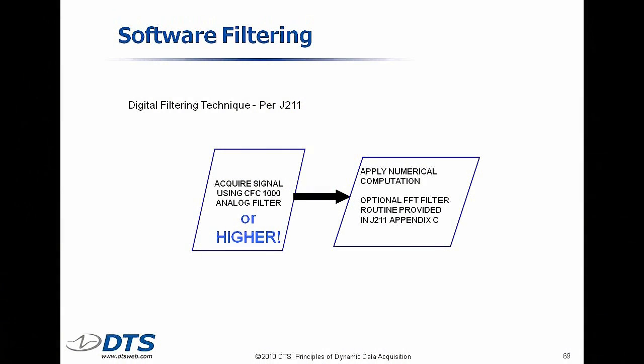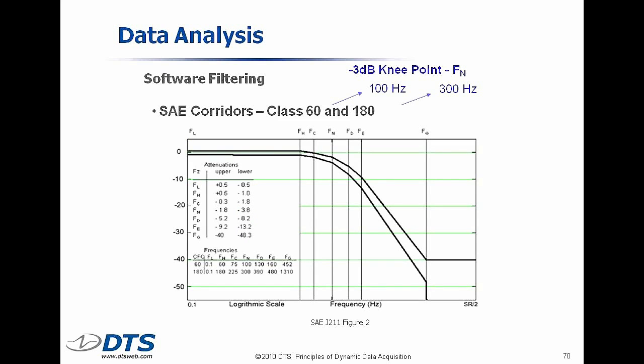The filtering technique we are required to apply in software: we get data from the data acquisition system, then we apply the software filter in accordance with J211, and then we run our injury calculations. We have to do it in that order. The software filtering is very well defined. There are only four frequency classes in J211 — class 60 and class 180. There is a table where all the points on the frequency axis are defined. F sub L is the lowest frequency, F sub H is the highest frequency of interest, and the corridors are well defined by the graph and by the numbers.